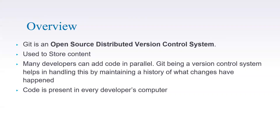Starting with the overview — what exactly is Git? Git is an open source distributed version control system. To understand what a distributed version control system means, imagine a situation where we have a very large, complex code base involving a lot of files, and on top of that there are multiple developers working on it. Each developer will be making their own changes, so there will be a lot of changes involved. There should be a system that can maintain a history of all the changes that have happened — what changes were made, by whom, and when.